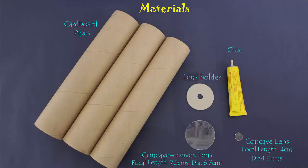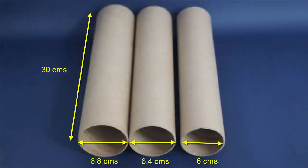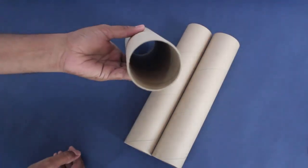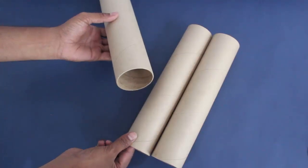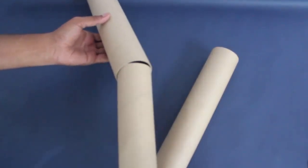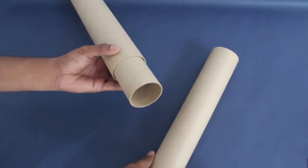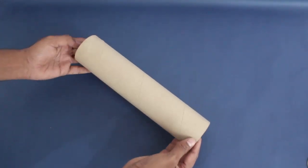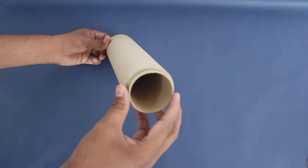It consists of three cardboard tubes and two lenses. The three cardboard tubes are each of 30 cm length but of different diameters so that they can slide one inside the other. This helps us in adjusting the focus and seeing a far away object clearly.